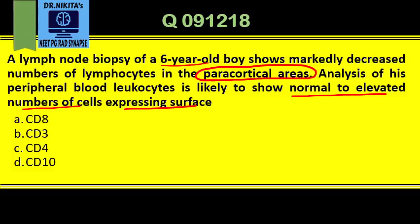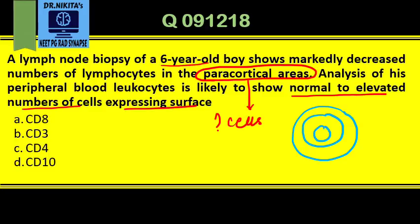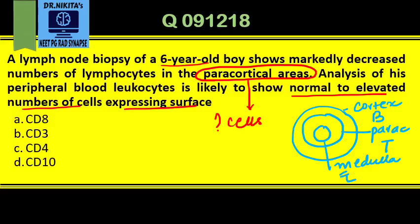When you get a question like this, concentrate on the most important term: paracortical areas. For a quick review — in the lymph node we have the cortex, paracortex, and medulla. The cortex is rich in B cells, the paracortex is rich in T cells, and the medulla (M for macrophages) is rich in macrophages. So from outside to inside: B cells, T cells, macrophages.